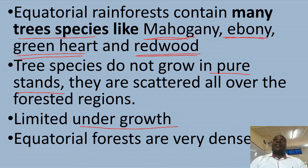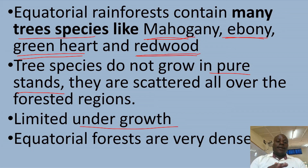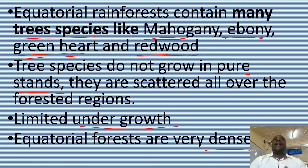Undergrowth is limited because there is not enough space, light does not easily penetrate inside, and the droppings of tree leaves — the mulch — will not allow this undergrowth. Lastly, equatorial rainforests are very dense; we always say they are impenetrable because the trees grow across each other.